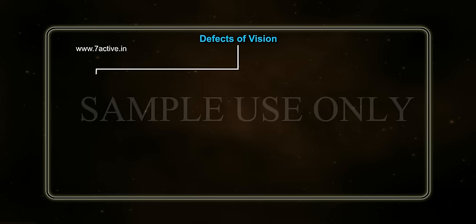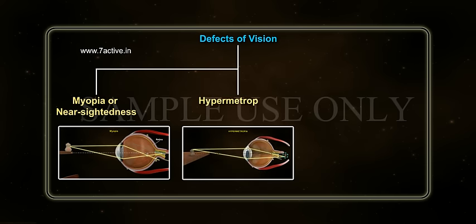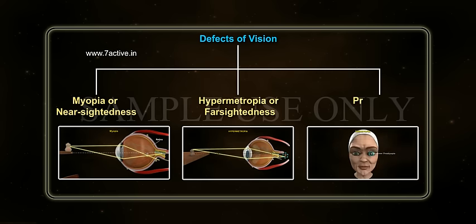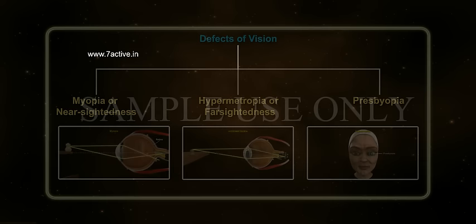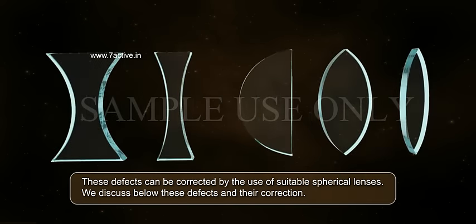These are: 1. Myopia or Nearsightedness, 2. Hypermetropia or Farsightedness, 3. Presbyopia. These defects can be corrected by the use of suitable spherical lenses. We discuss below these defects and their correction.